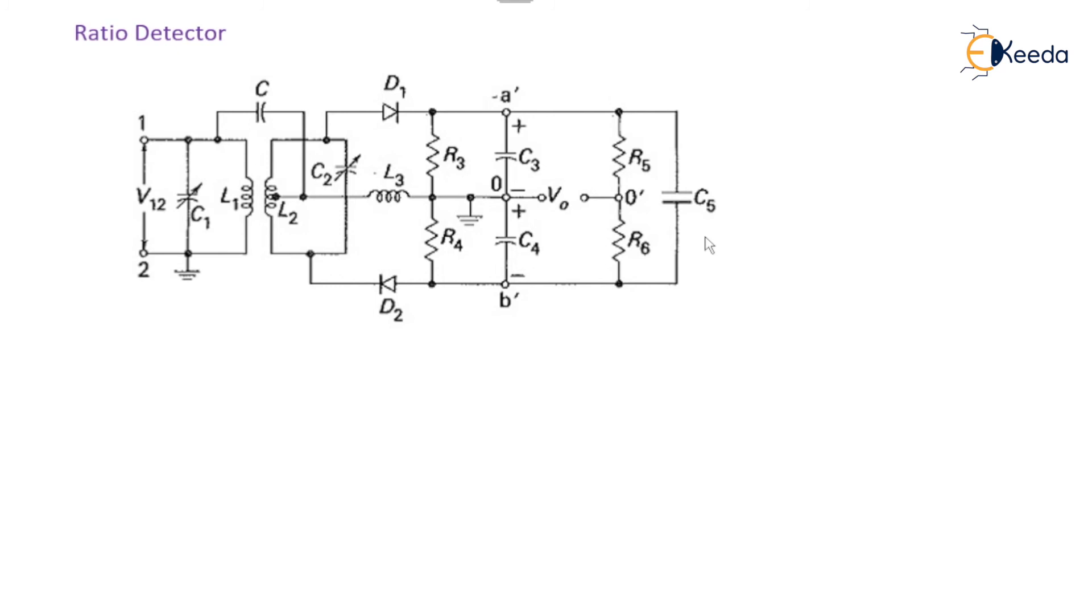Hence, the load impedance is said to be decreased. And due to this decreased load impedance, the secondary of the input transformer is heavily damped.